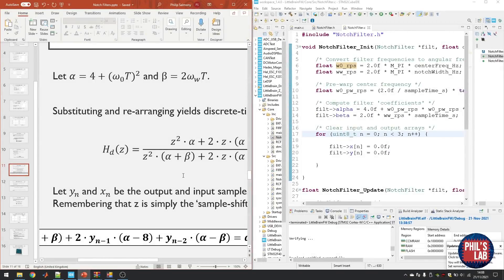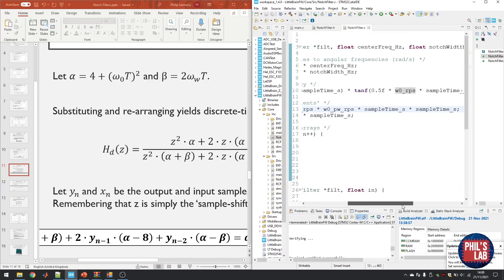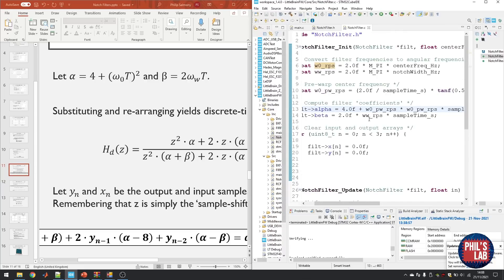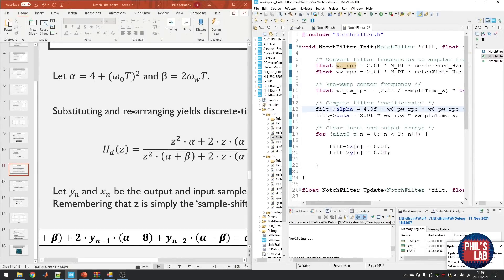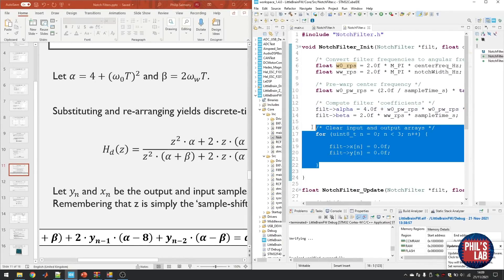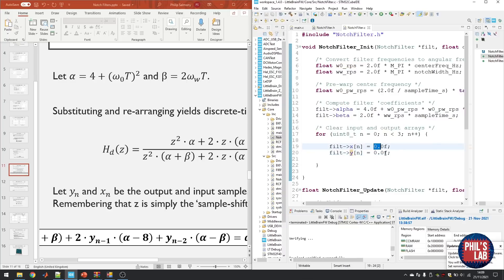Remember before going to the difference equation, I pre-computed some filter coefficients or some constants that we use a lot in our filter. That's what I've stored in the struct here. So alpha is simply 4 times ω₀ times T all squared. Beta is 2 times ωw times T. Then also the last part of my initialization is actually to clear the input and output arrays and store zeros in those arrays. So we have defined values.